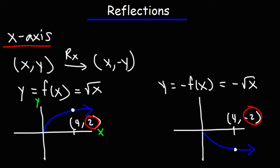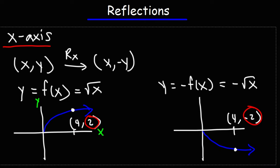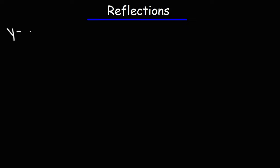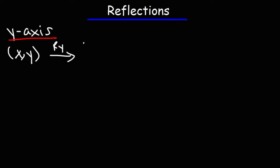Now let's move on to the y-axis. If we want to reflect the point (x, y) over the y-axis, the y-values will stay the same, but the x-values will change. So (x, y) is going to become (-x, y).